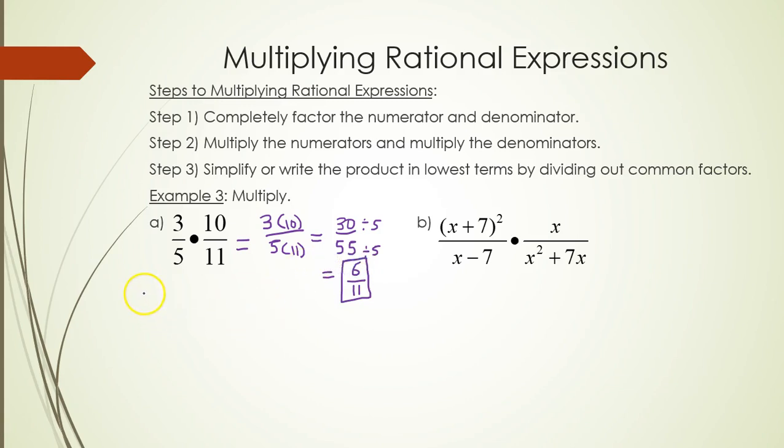One other method that you might have learned would be, instead of waiting till the end to simplify, which is after you multiply the tops and bottoms together, you could actually cross-simplify, cancel out diagonally. So 10 and 5 are both divisible by 5.